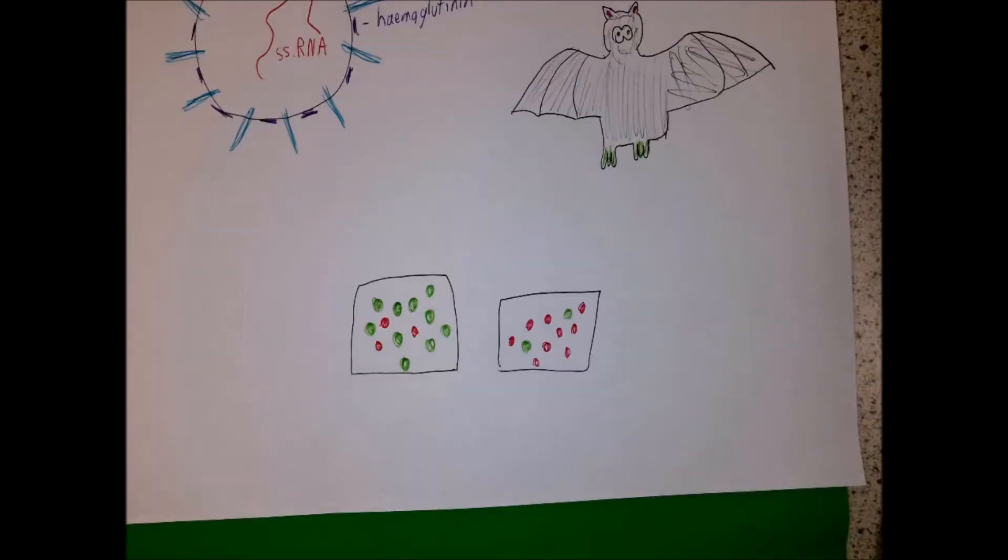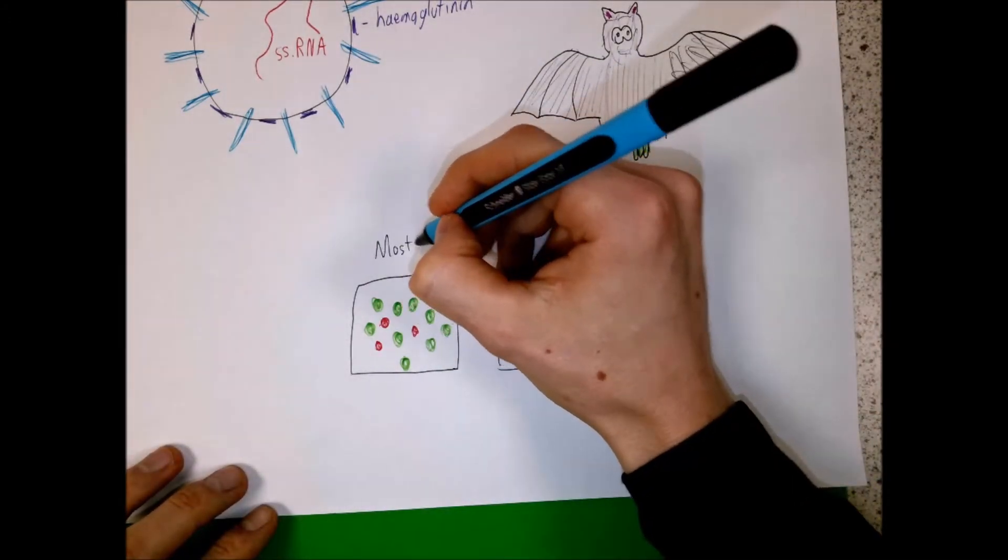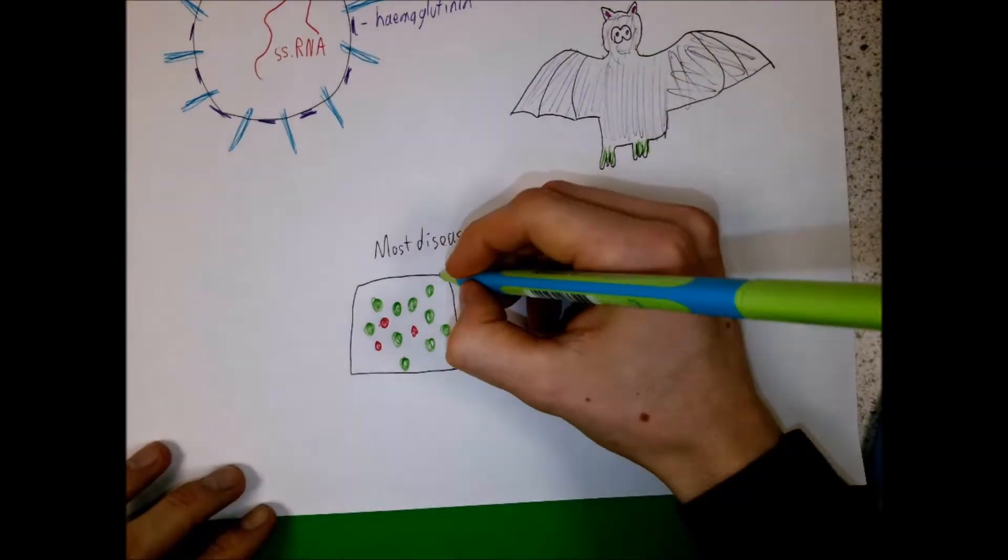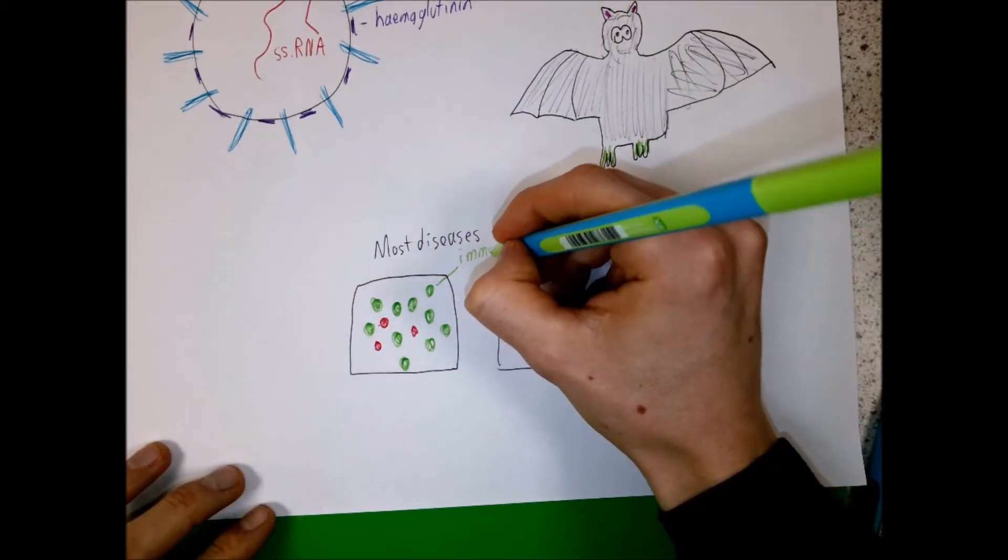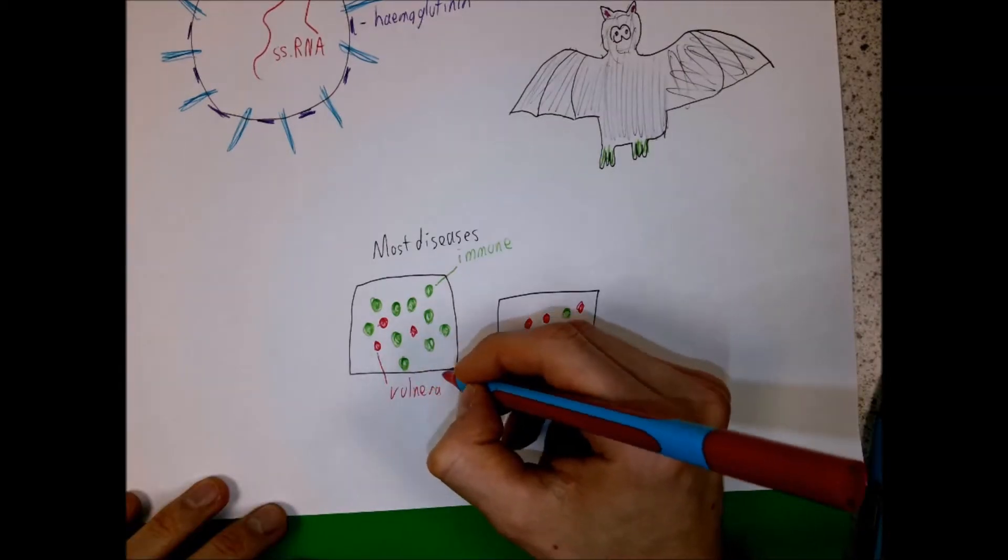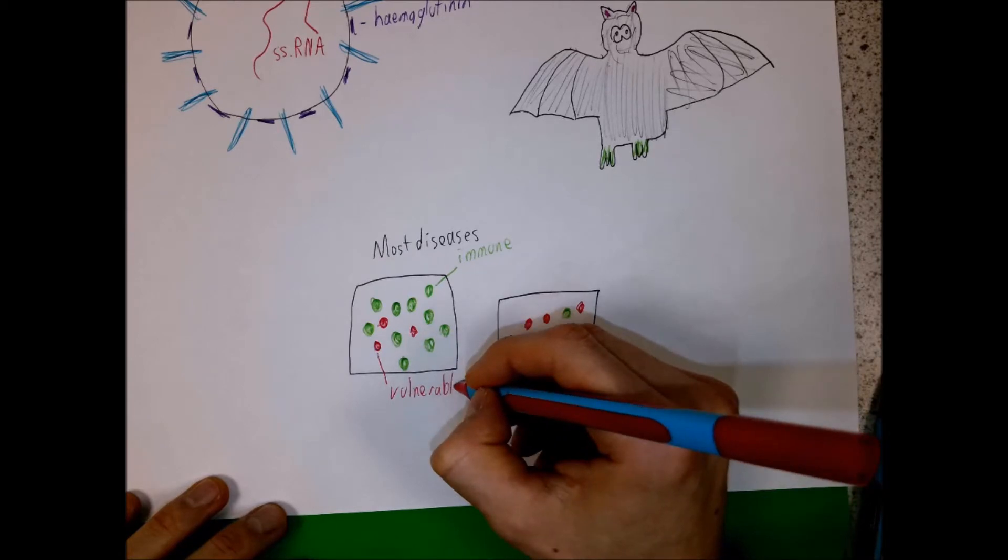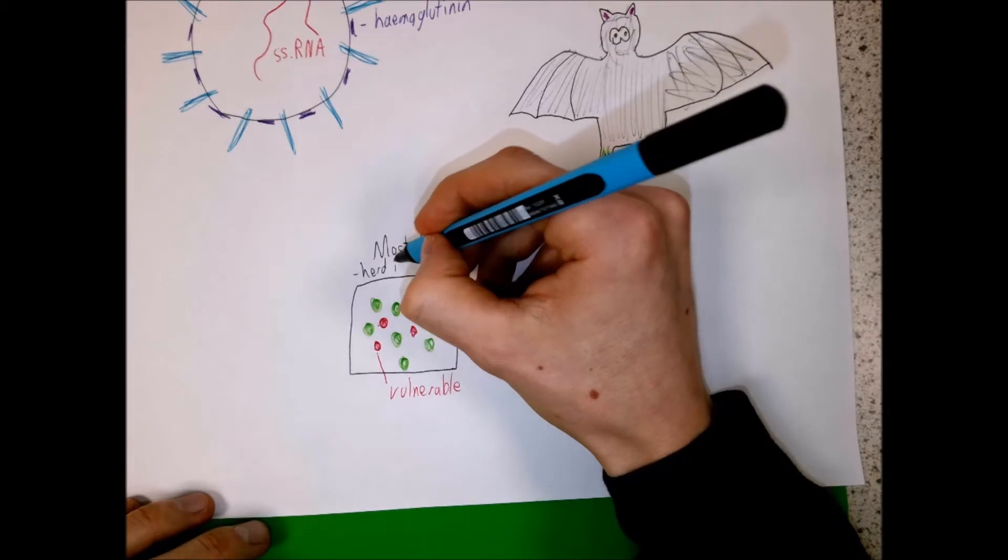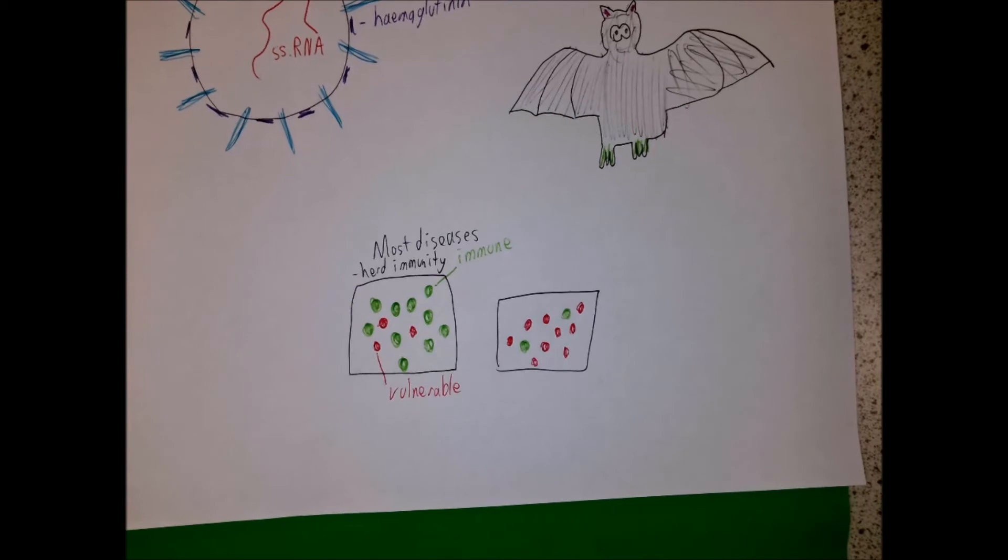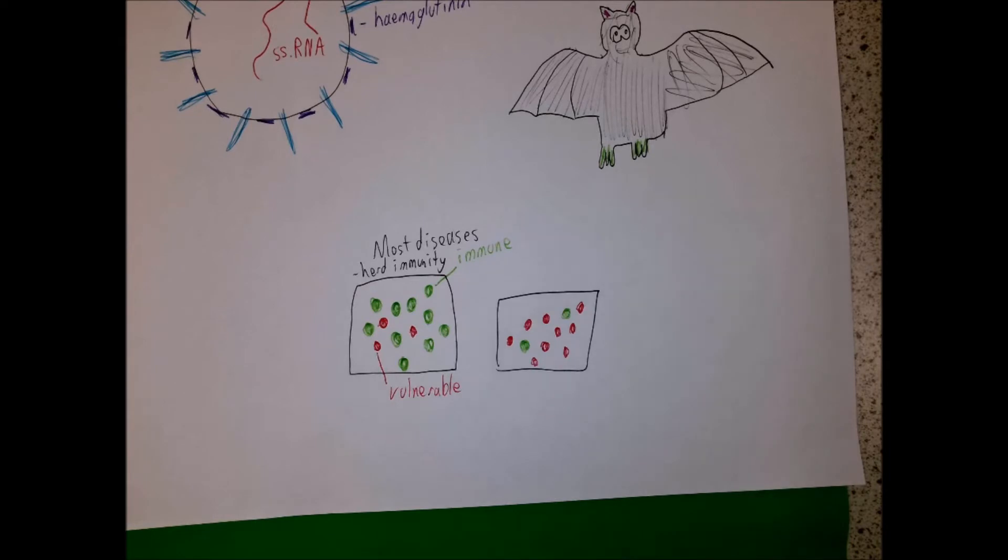So for most diseases, we could draw a diagram which looks a bit like this. So what the key shows is the green blobs are going to be individuals who are immune to the disease. So this could be because they're vaccinated. It could be because they've already caught it. The ones in red are going to be the ones who are vulnerable to the disease. So they're not immune and they can still catch it. For most diseases, we've got something called herd immunity. So particularly for things where there's vaccinations, there's so many people who are immune to it in a population that it finds it very hard to spread because there aren't enough vulnerable people to pass it from carrier to carrier.